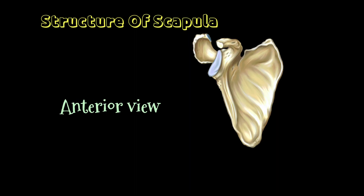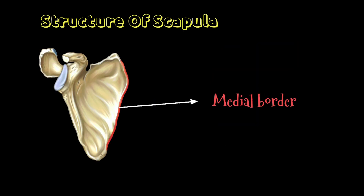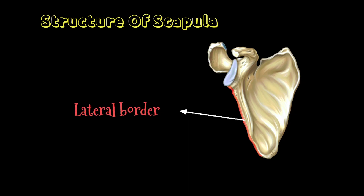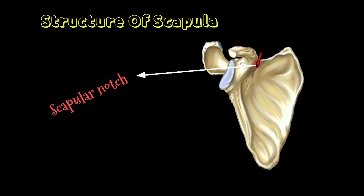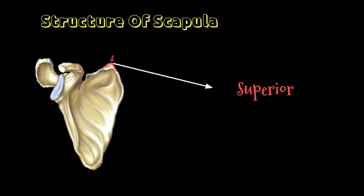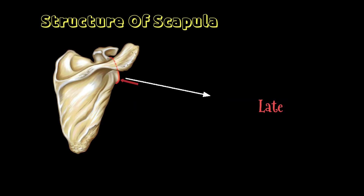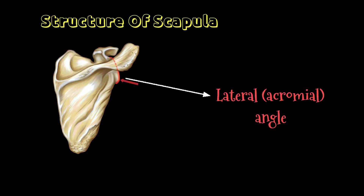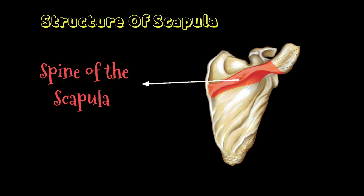Structure of the scapula: anterior view, posterior view, and medial border. Lateral border, superior border, scapular notch, superior angle, inferior angle, acromial or lateral angle, and spine of the scapula.